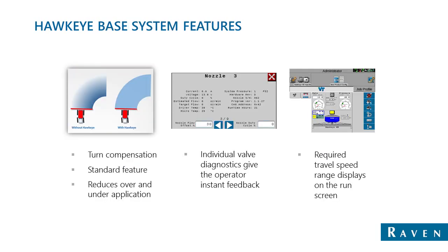Some Hawkeye base system features: turn compensation is standard, creating a consistent spray pattern from the inside to outside of the boom while going around corners. Individual valve diagnostics let you read the duty cycle and temperature of each nozzle — about 10 different items reporting at all times. On the center of your run screen, there's a required travel speed range that tells you the optimal speed based on your flow rates, pressures, and nozzle tip selection, and it will alarm you anytime you go below or above that range. It also shows optimum pressure range and flow rate range dials, alarming you if you exceed those.